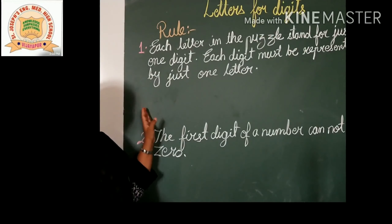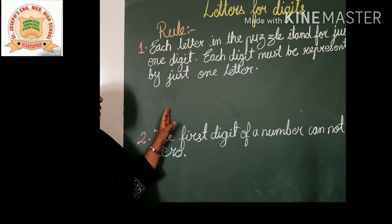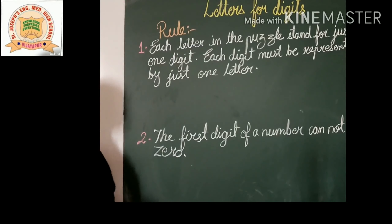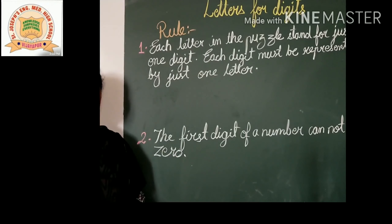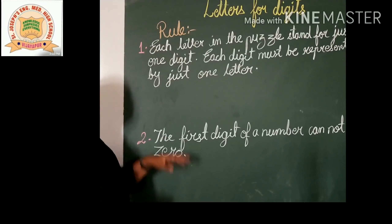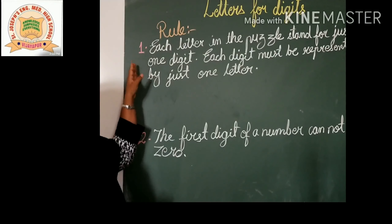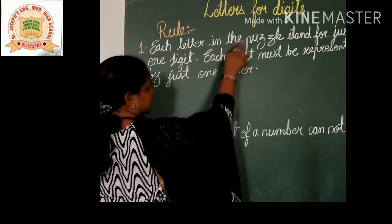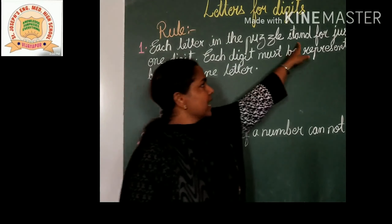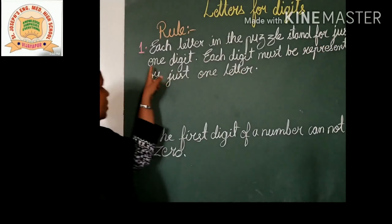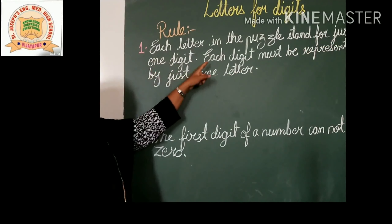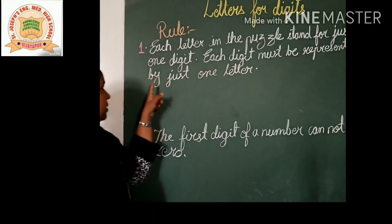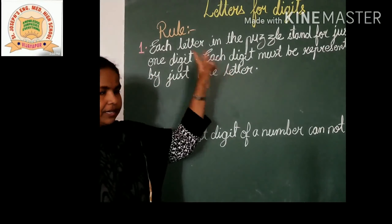While simplifying letters for digits, you have to follow these two rules, as well as you have to use your logic. The first rule: each letter in the puzzle stands for just one digit. The second rule: each digit must be represented by just one letter.